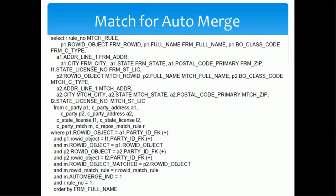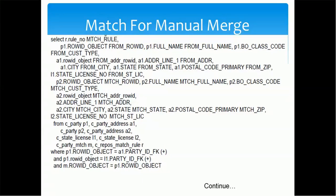Then we have m.auto_merge_indicator equals 1 and r.rule_number equals 1 if you are fetching for rule number 1, and we order by full name. Once we define these conditions, we can fetch any attributes within those tables. For example, in the SELECT we have r.rule_number as match_rule, p1.row_id_object as from_row_id, p1.full_name as from_full_name, and so on. This query gives us all records which are in the match table and eligible for auto merge, so business people can analyze the results and assess whether those candidates are correct for auto merge.